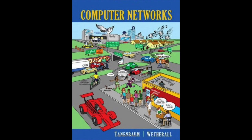Furthermore, the transport primitives can be implemented as calls to library procedures to make them independent of the network primitives. The network service calls may vary considerably from one network to another. Hiding the network service behind a set of transport service primitives ensures that changing the network merely requires replacing one set of library procedures with another. Thanks to the transport layer, application programmers can write code according to a standard set of primitives and have these programs work on a wide variety of networks without worrying about different network interfaces and levels of reliability.